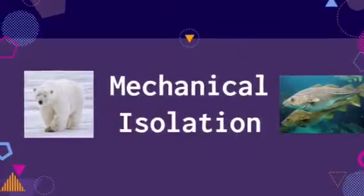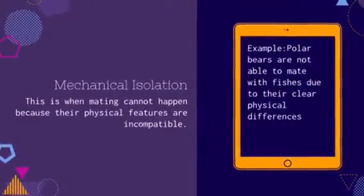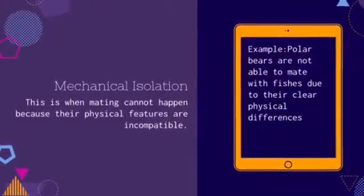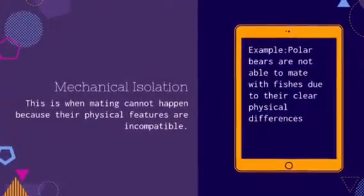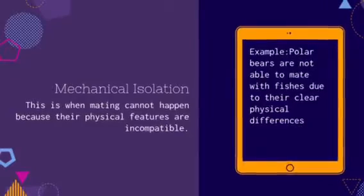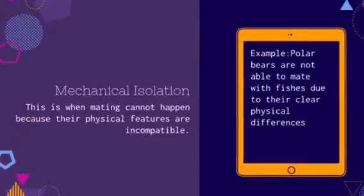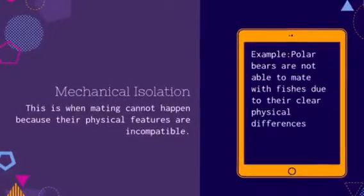Mechanical isolation is when mating cannot happen because their physical features are incompatible. For example, polar bears are not able to mate with fish due to their clear physical differences.